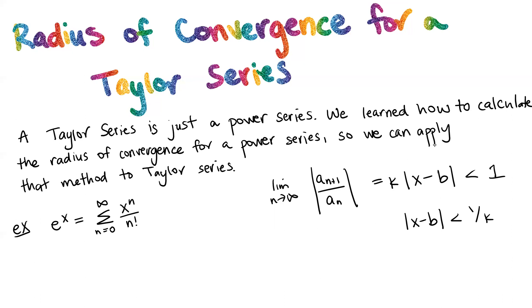Okay, so let's apply this to the Taylor series expansion for e to the x. So in our situation here, a_n is x to the n over n factorial, and a_(n+1) is x to the n plus one over (n+1) factorial.